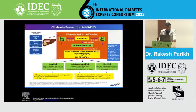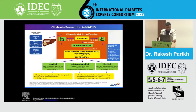This was already covered by Dr. Bharat — based on the FIB score, which is very easy and can be done on the internet using the calculator. You just need to input three or four parameters and you get a risk score for the patient. The patient can be at low risk of cirrhosis, high risk, or intermediate risk.